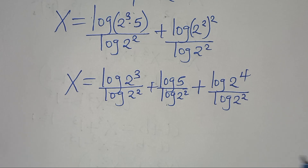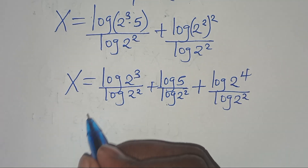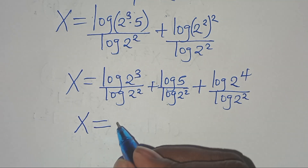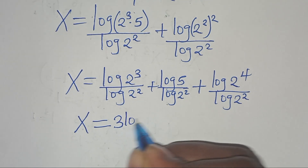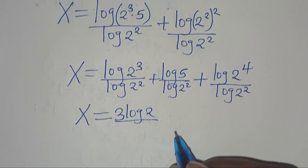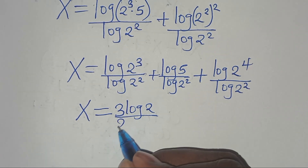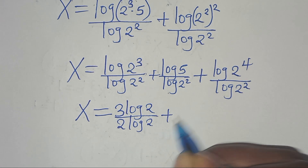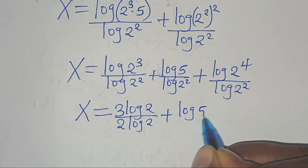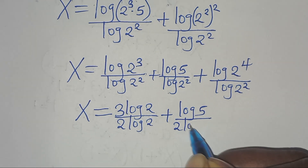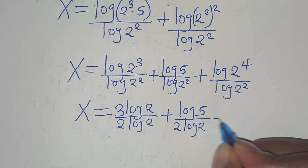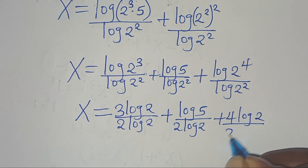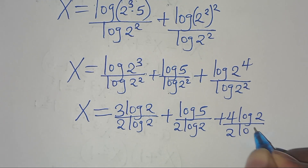The next step is to apply the power rule property. log(2^3) becomes 3·log(2), and log(2^2) becomes 2·log(2). So x equals 3·log(2) divided by 2·log(2), plus log(5) divided by 2·log(2), plus 4·log(2) divided by 2·log(2).